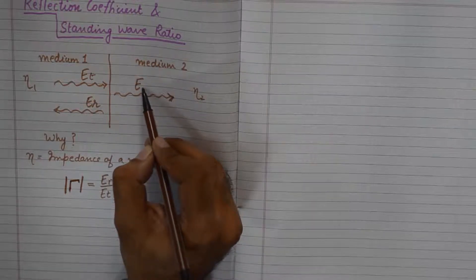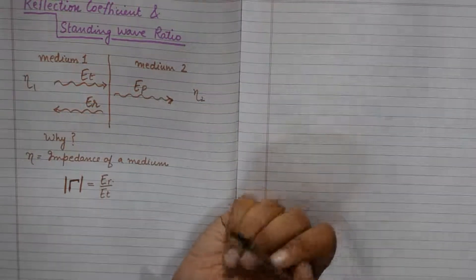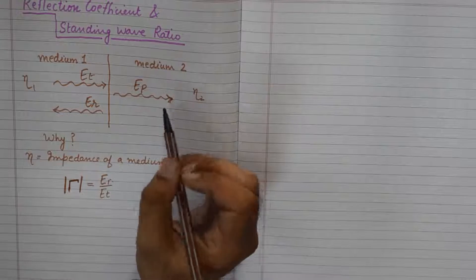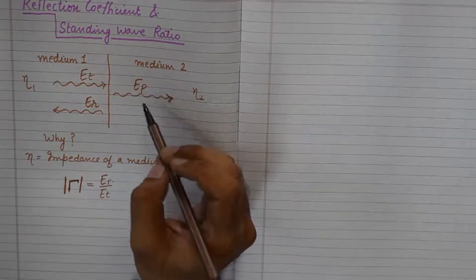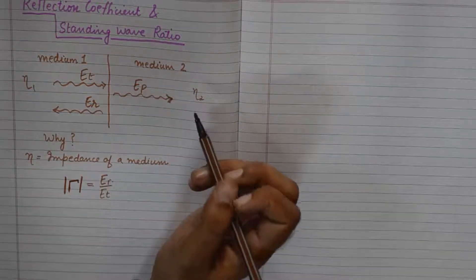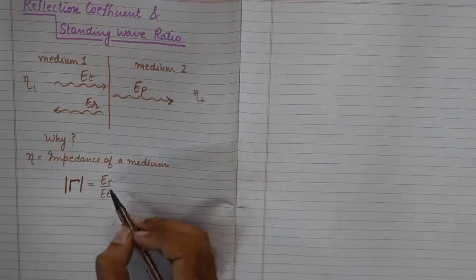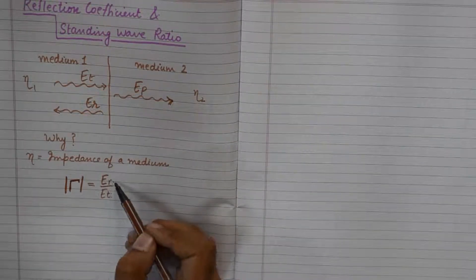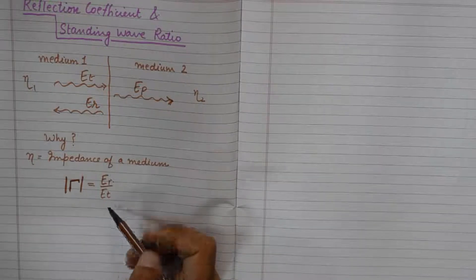And EP, let us say, is the amount of radiation which is propagated into the other medium. So this is a pretty simple ratio: how much energy is reflected back upon how much was transmitted.